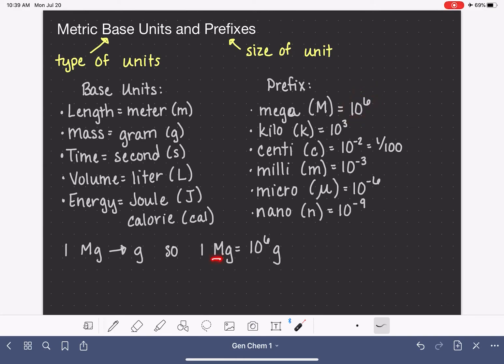So 1 mega anything, 1 megasecond is 10 to the 6 seconds. 1 megaliter is 10 to the 6 liters. And I'm going to actually write this in another way. Let's say 1 megagram is 10 to the 6 grams or 1 times 10 to the 6 grams. And I'll show you why I do that in just a second.